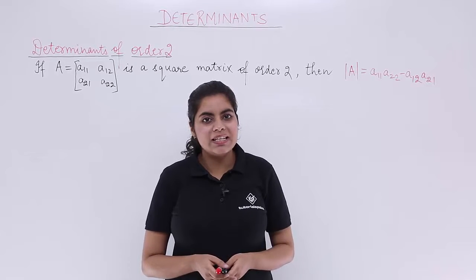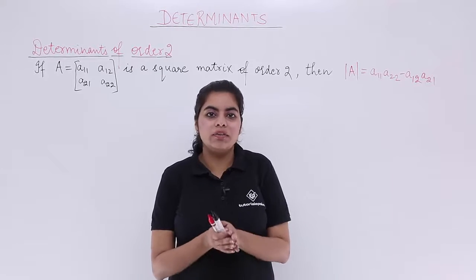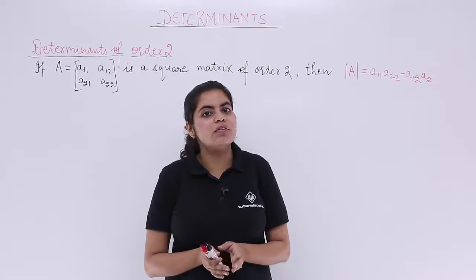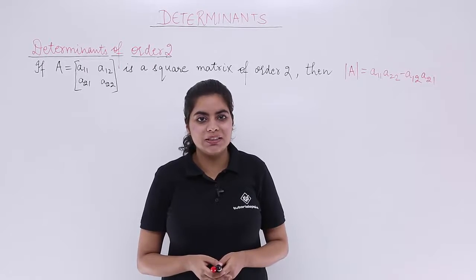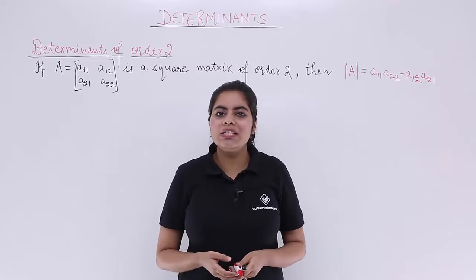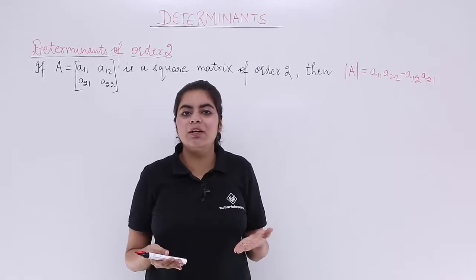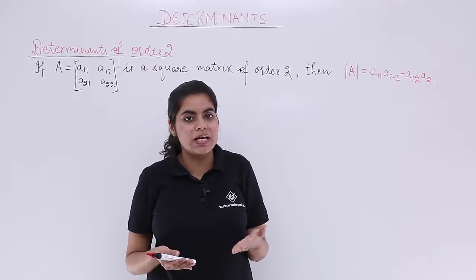In this video let's see what is the value of determinant in case of square matrices of order 2. We already have seen in the previous video what is the determinant value when the square matrix has order 1.